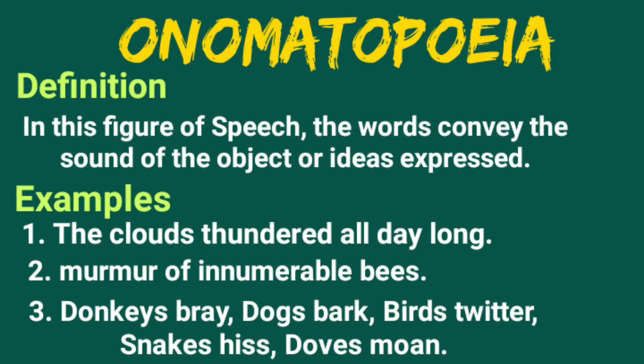The next figure of speech is Onomatopoeia. In this figure of speech, the words convey the sound of the object or ideas expressed. When different animals, things, or objects are there, sound-denoting words are used to indicate the sound produced. For example: the clouds thundered all day long; murmur of innumerable bees; donkeys bray, dogs bark, birds twitter, snakes hiss, dogs moan. Thundering of clouds is a sound-denoting word — when two or more clouds clash, that sound is produced. Murmur of innumerable bees — when bees come together in search of flowers and nectar, that murmuring sound is produced.